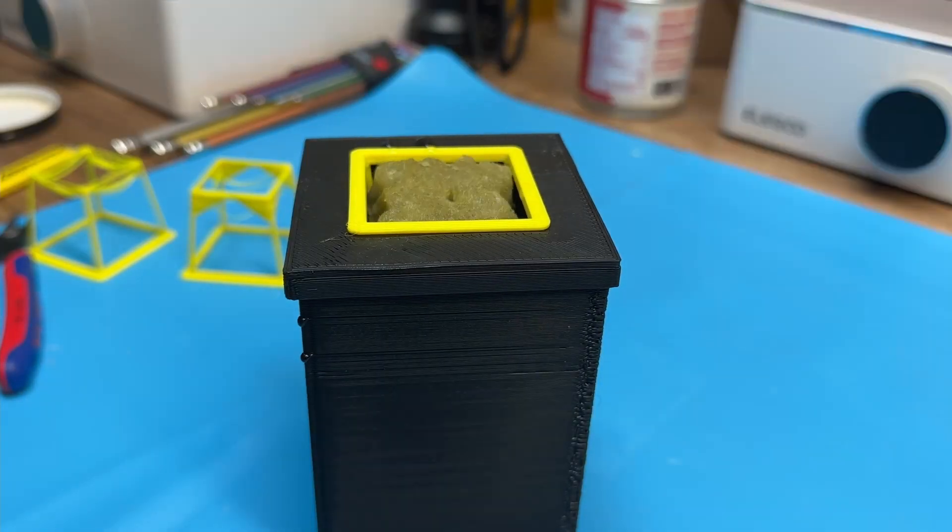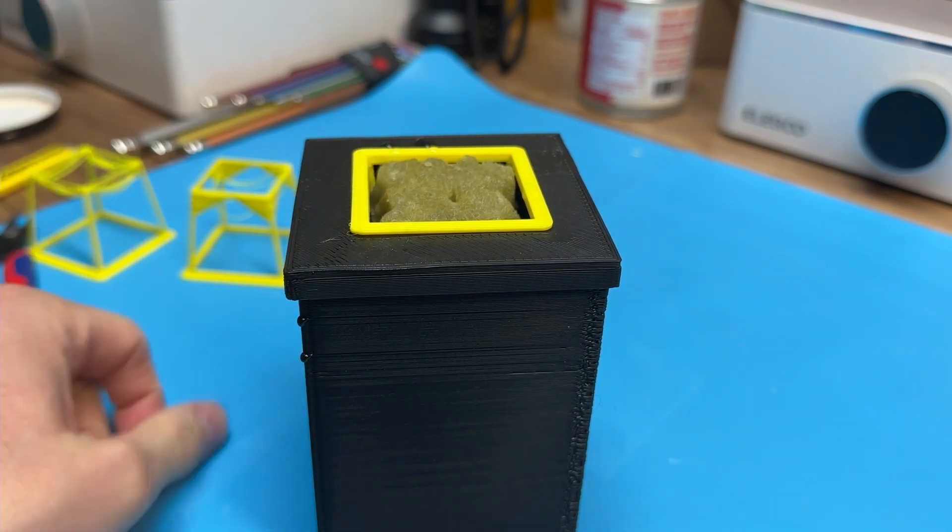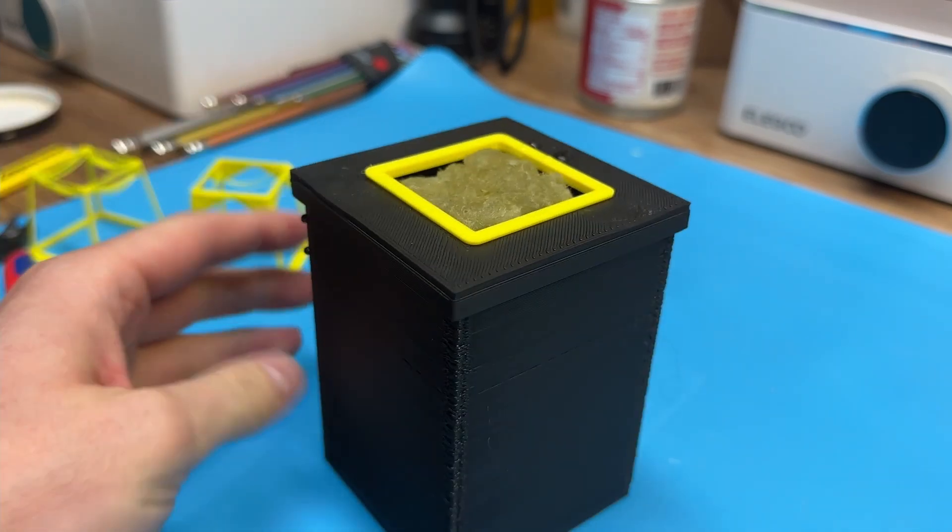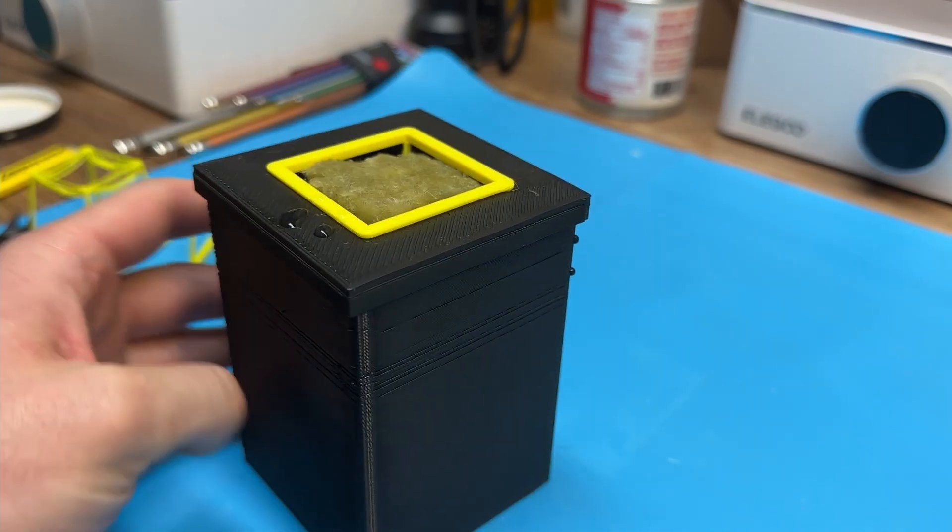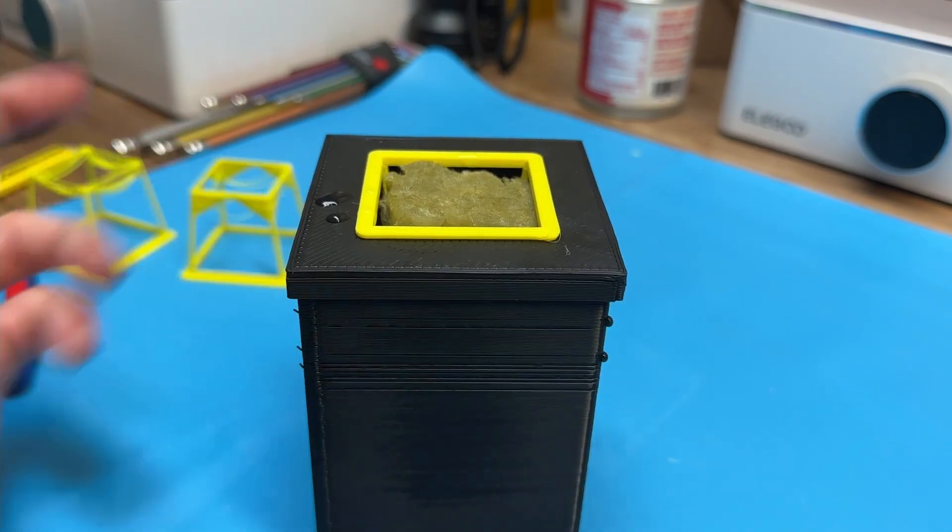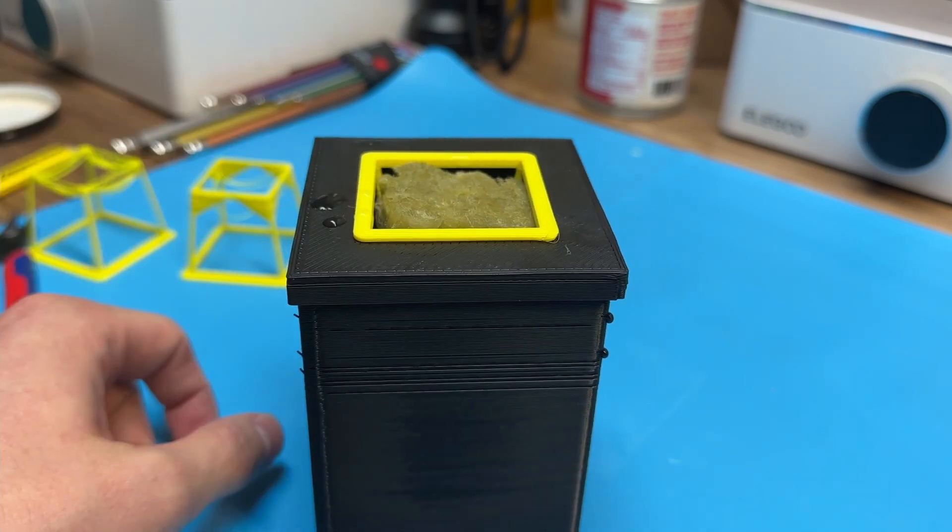If you want to support the channel, you can hit the Amazon links for these Rockwool cubes and buy whatever you want on Amazon. Or I'll also put a link for the PLA in the description for some eSun PLA+, which is essentially what Bamboo uses and rebrands as their own. If you like the video, be sure to hit that subscribe button and I'll see you in the next one!